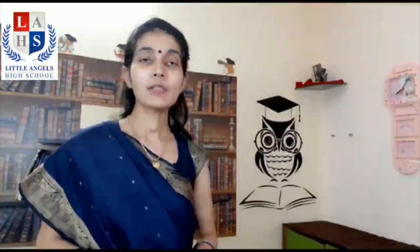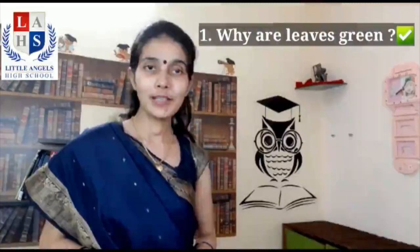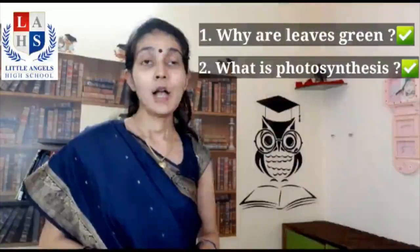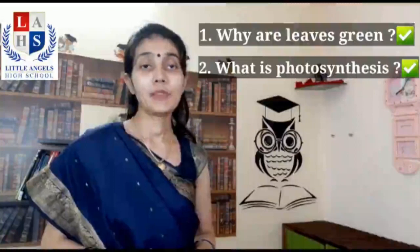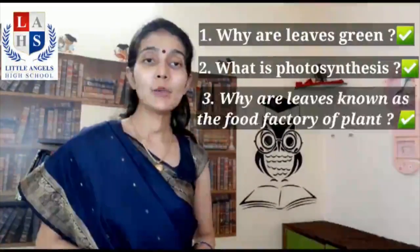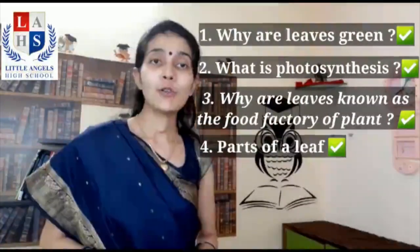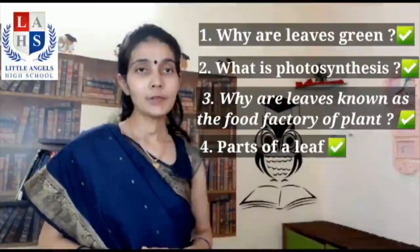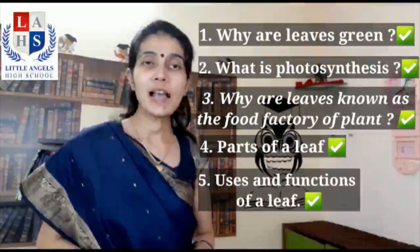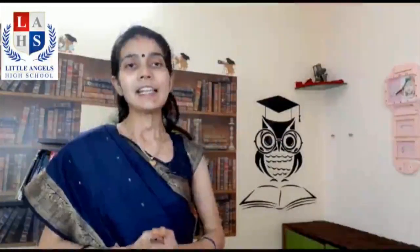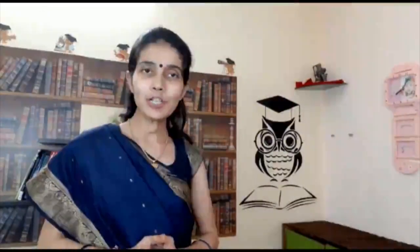So directly or indirectly, every animal including man is dependent on plants. In this chapter we learned about: first, why are leaves green; second, what is photosynthesis; third, why are leaves known as the food factory of the plant; fourth, what are the parts of a leaf; and fifth, what are the uses and functions of a leaf. We'll be continuing with the next chapter in the next video — till then, take care of yourself and keep watching the videos.